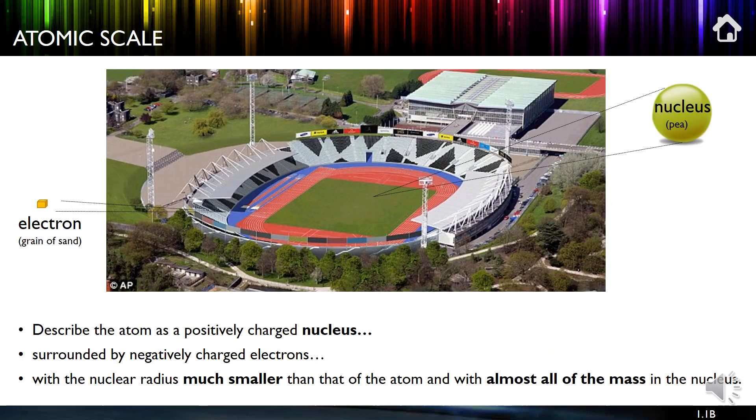Now the size of atoms are incredibly small. We haven't got a screen or a piece of paper big enough, so we need an analogy. And the analogy is a stadium here. And if the nucleus was the size of a pea, the electrons would be much smaller and very far away, about the outside of the track.